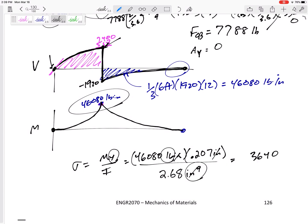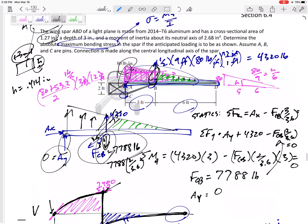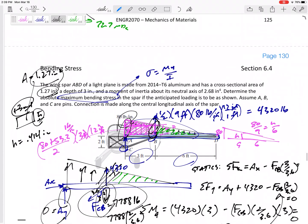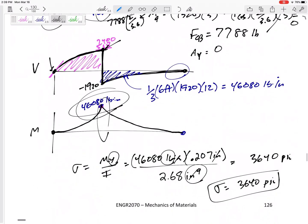3,640 pounds per square inch. So the maximum is 3,640 psi. Where would that occur? Right here. And where on the cross-section? At the very top or the very bottom.